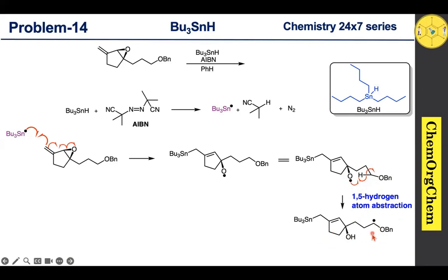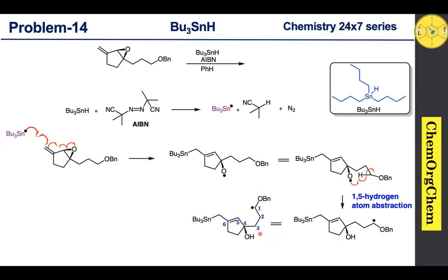Now you see this intermediate — the carbon-centered radical reacts with the alkene. We can redraw the structure and start numbering. The carbon-centered radical reacts at the fifth position, since formation of a smaller-membered ring system is favored over a larger ring system in radical cyclization reactions. This radical reacts in a 5-exo-trig cyclization manner.